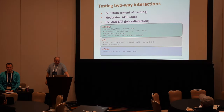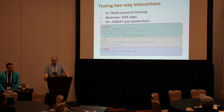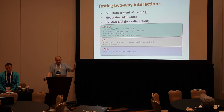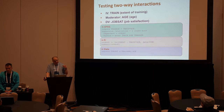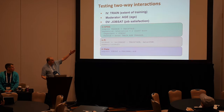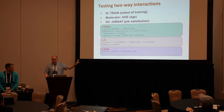If we want to test a two-way interaction, we just need to remember what we put into the regression equation. We need three predictor variables in the model: X — which in this case might be training (the variable 'train' in the dataset) — the moderator, which is Z or age in this example, and then we also need to include the interaction between them. You can see in the different forms of syntax for whichever software you are using.